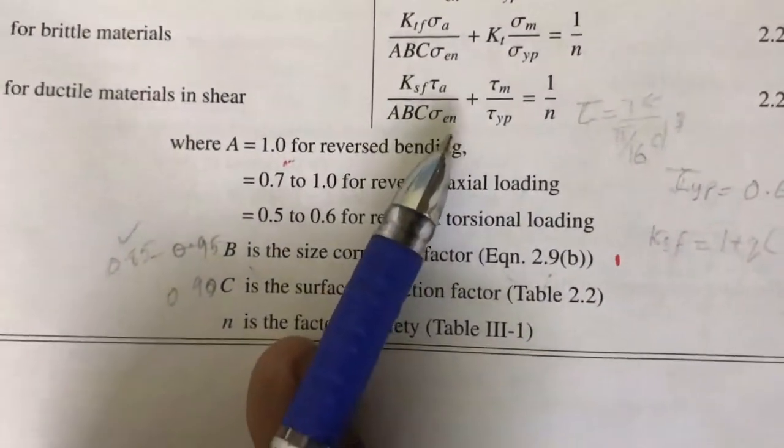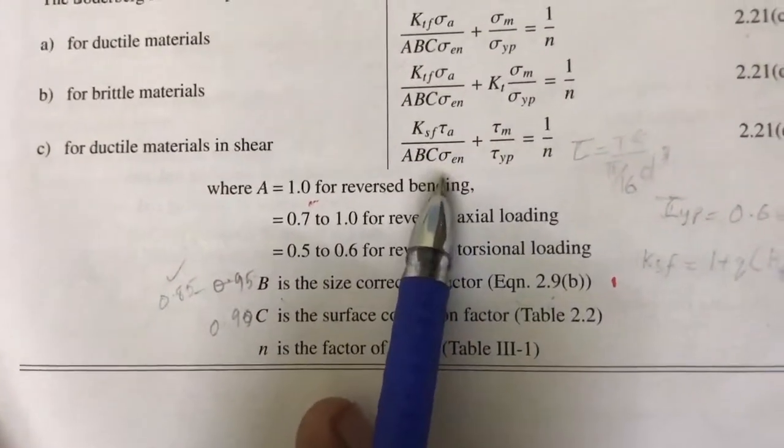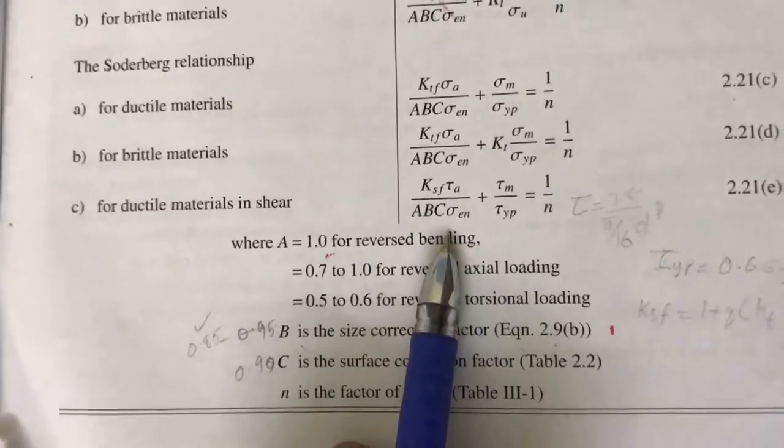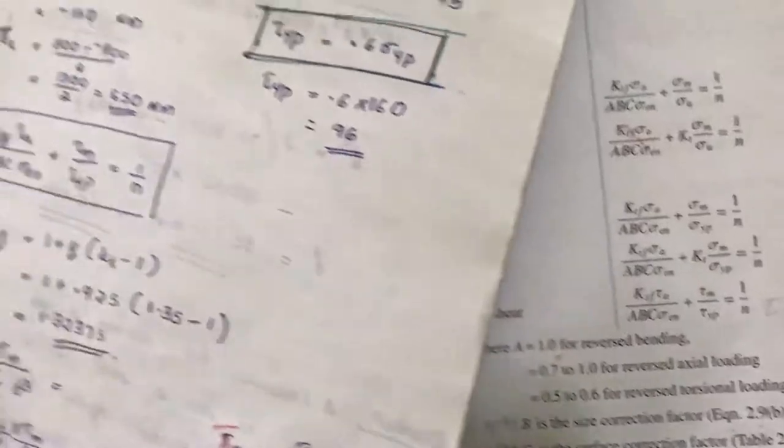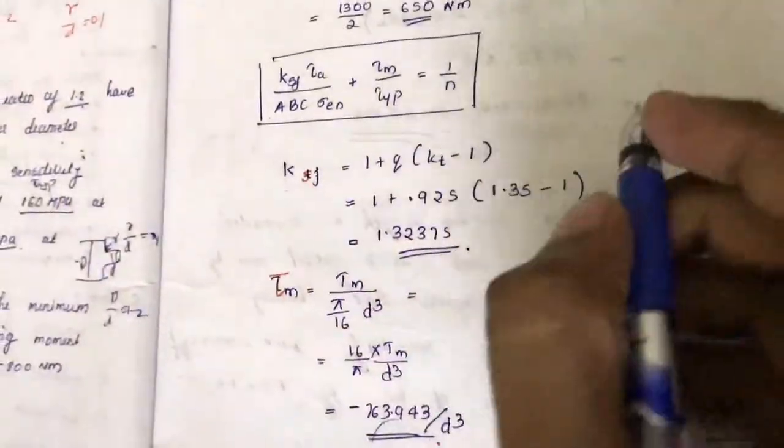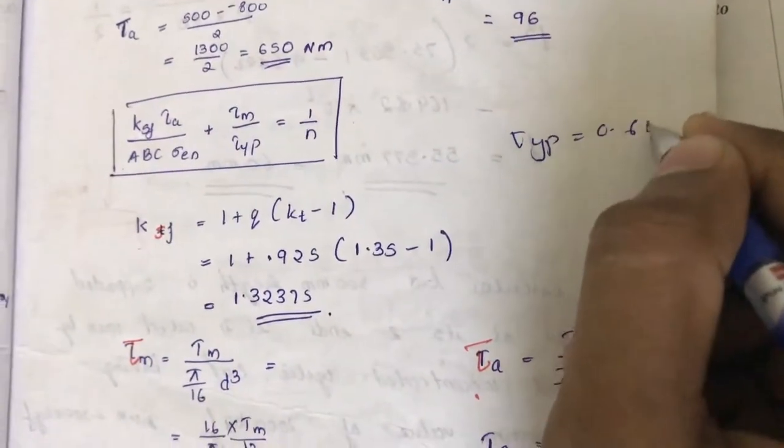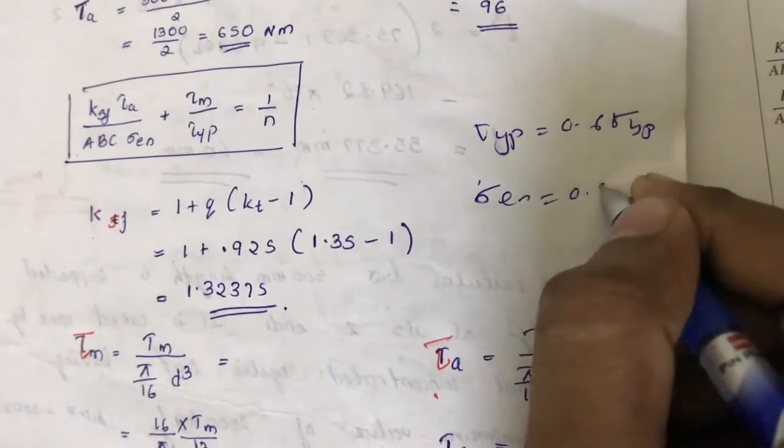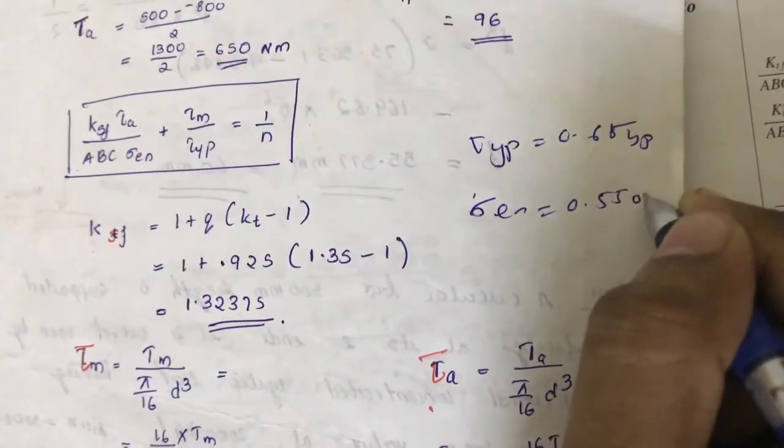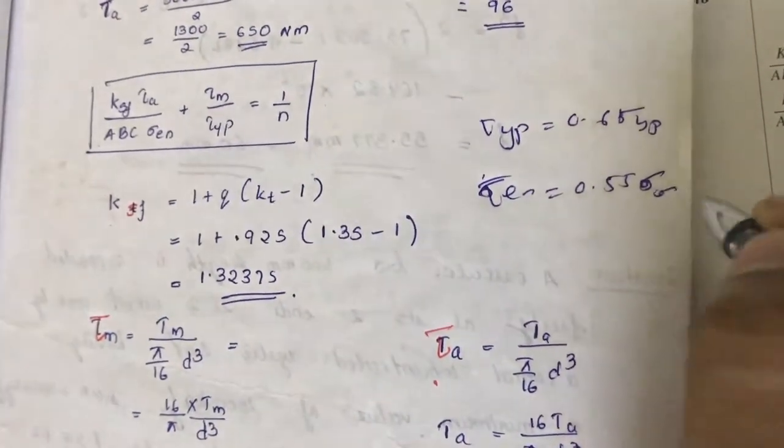That we will substitute here in this equation, only tau, only case we have this tau a and tau m. So we will substitute here. Then sigma en, endurance limit. If endurance limit is not given, we should use this formula like tau yp is equal to 0.6 sigma yp. Then there is like the tau en is equal to 0.55 sigma en, something like that. There is a formula.